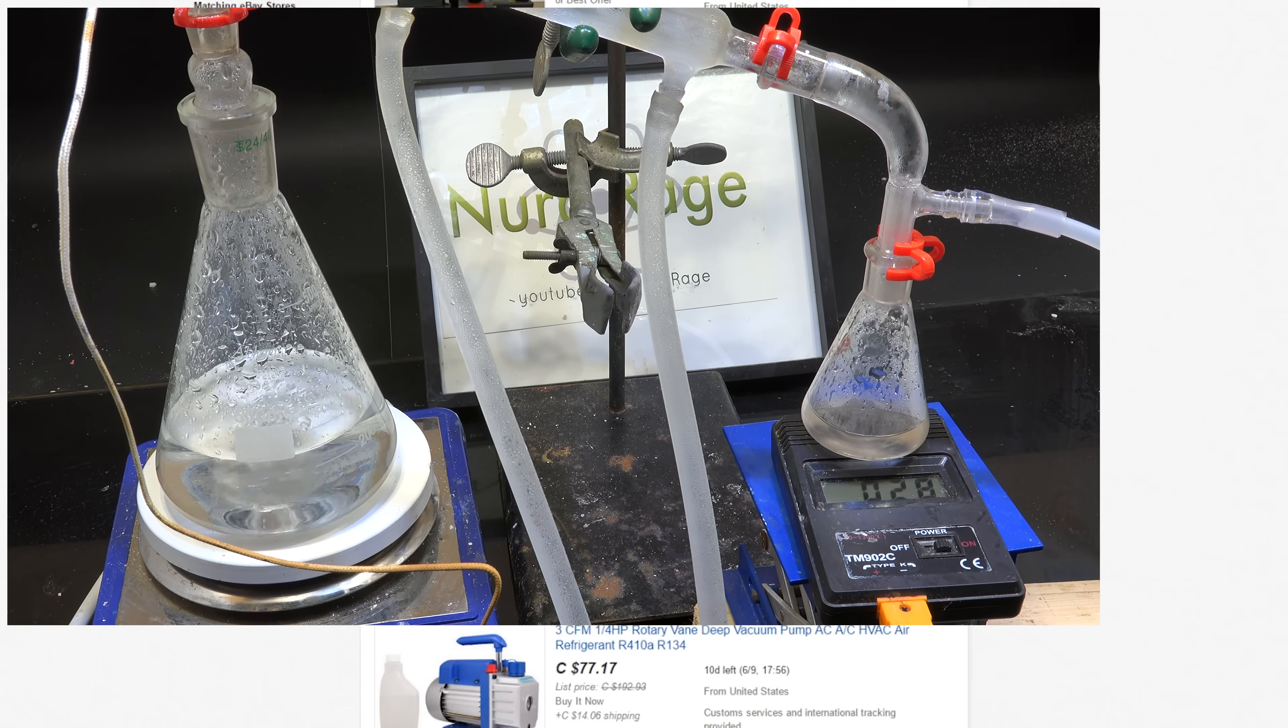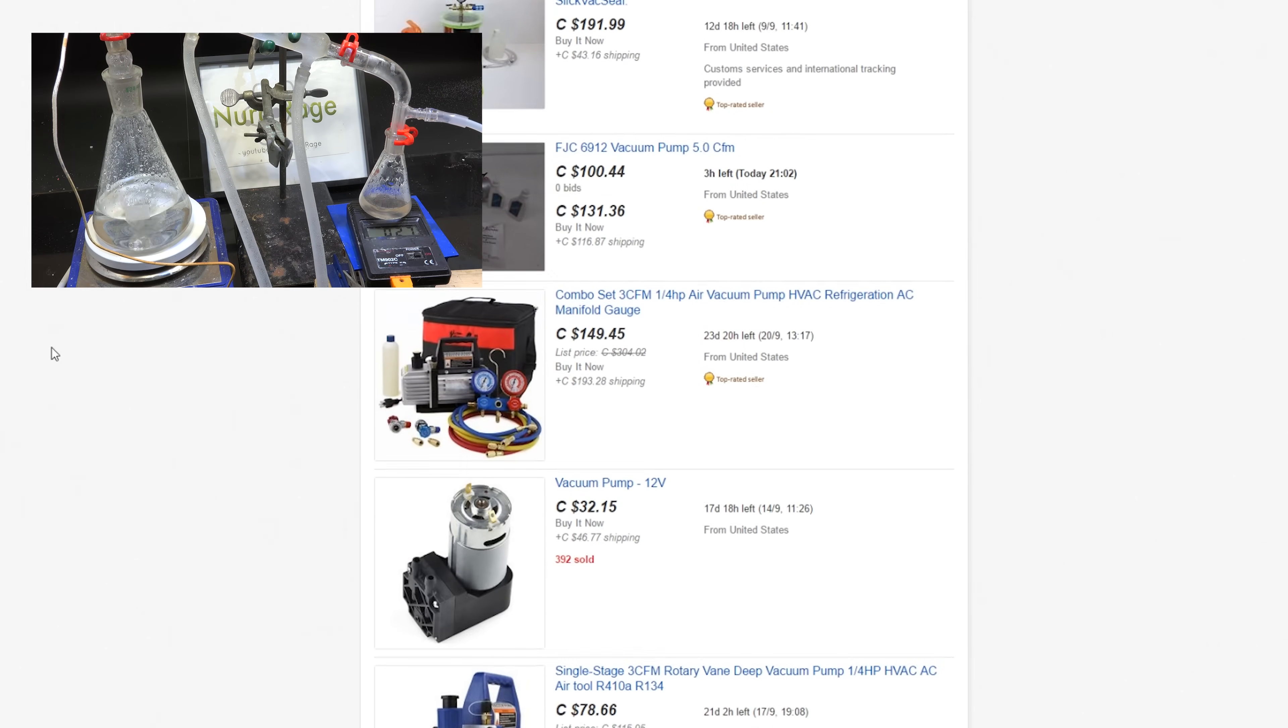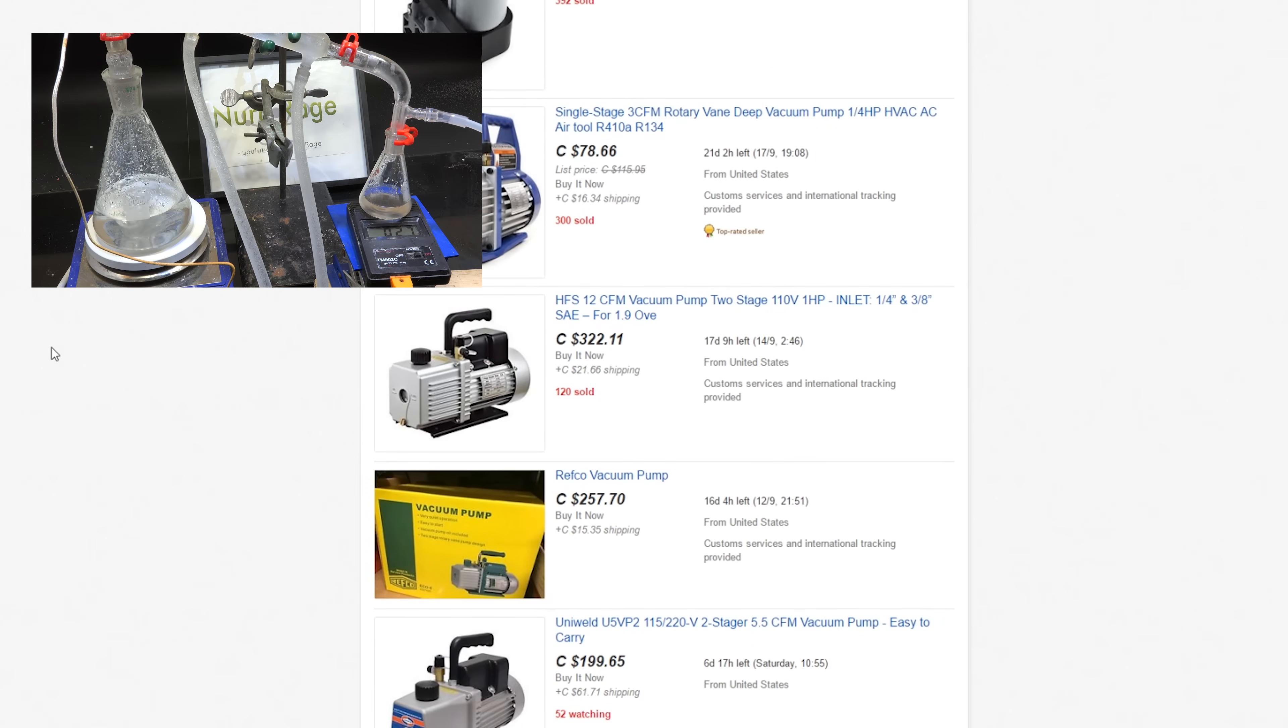Now if you go online and look for vacuum pumps you'll find thousands of better vacuum pumps that can easily reach submillibar pressures for very reasonable prices. Most of them are of the rotary vane type.